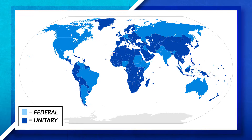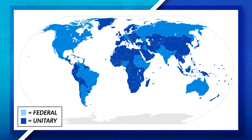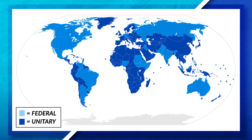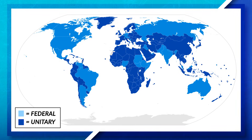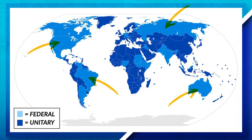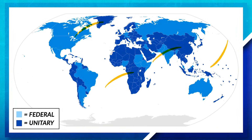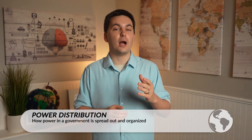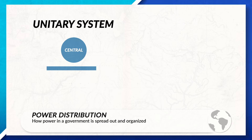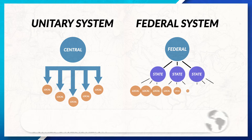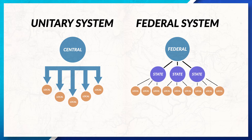If we look at a map of the world today, we can see that both federal and unitary forms of governments are practiced around the world. Federal states tend to have a more diverse population and larger geographic area, whereas unitary states tend to be geographically smaller and have more of a homogenous population. Just remember: unitary states have the power at the national level, and federal states share the power between the national government and regional government.